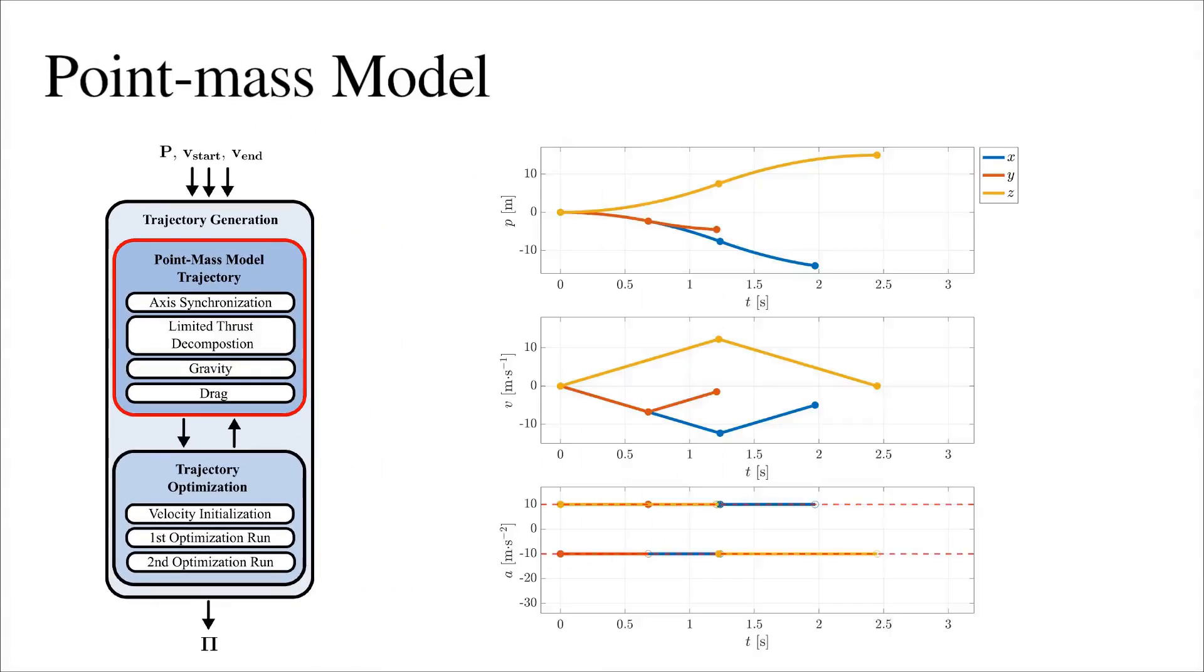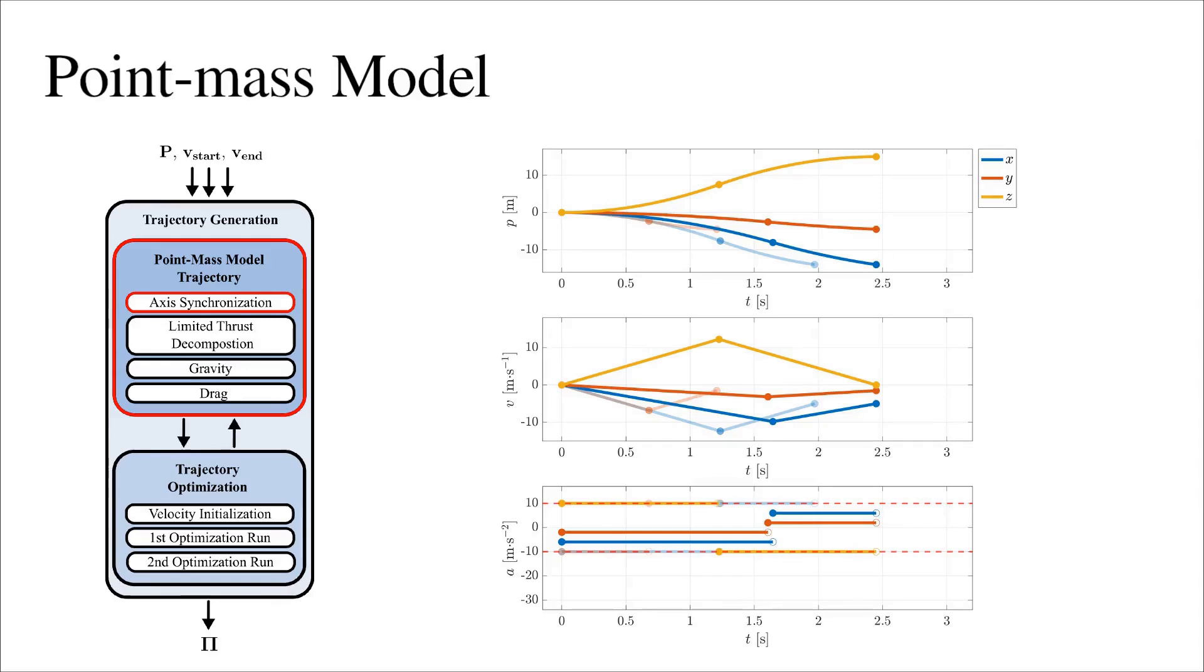First, closed-form solutions to point mass model equations are found in each axis. To achieve a minimum time trajectory, maximum allowed per-axis acceleration is used. To obtain a three-dimensional trajectory, the axes are synchronized.